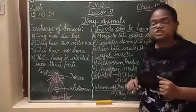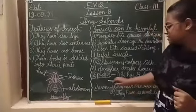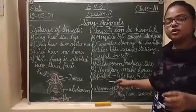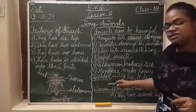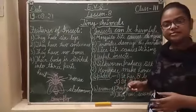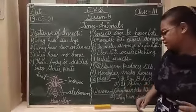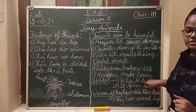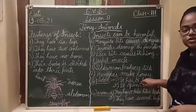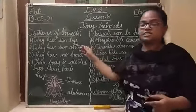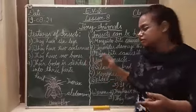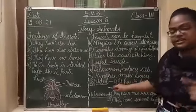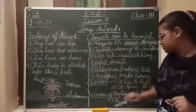Now, spider. Spider is a tiny animal but it is not an insect. Spider ek tiny animal hai but insect nahi hai. Spider has eight legs — spider ki eight legs hoti hain, while insects have six legs. So their features are different. That's why it is a tiny animal but not an insect.